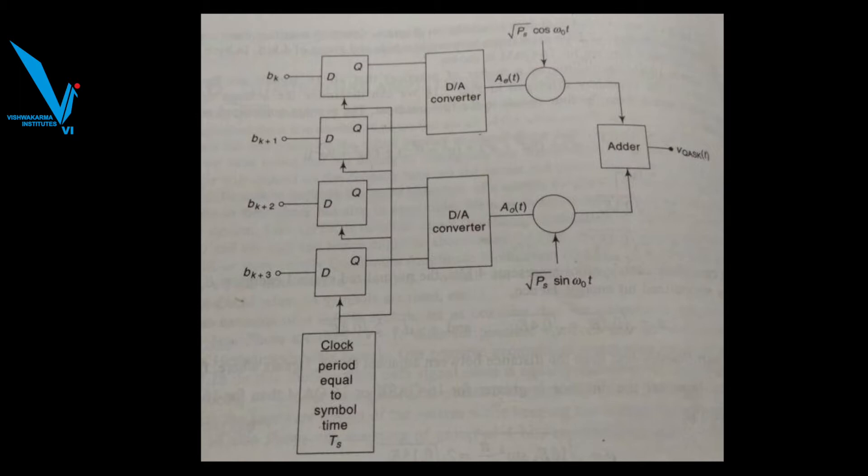Now here in this case, the bandwidth of QASK signal is given by 2fb/n. Now here, if you see the bandwidth, if you compare with QPSK, in case of QASK the bandwidth required is half, and compared to BPSK it is one-fourth. So the bandwidth requirement is very less. But here in this case, the distance is also less, so the error rate is going to be high.